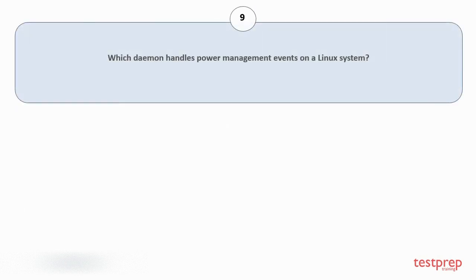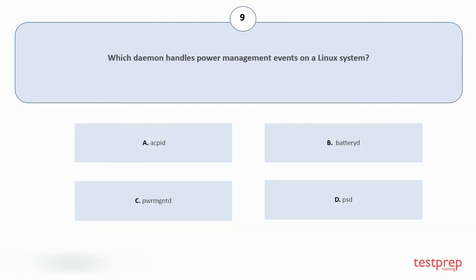Question number 9: which daemon handles power management events on a Linux system? Your options are: a. acpid, b. batteried, c. pwrmgntd, d. dpsd. The correct answer is option A.